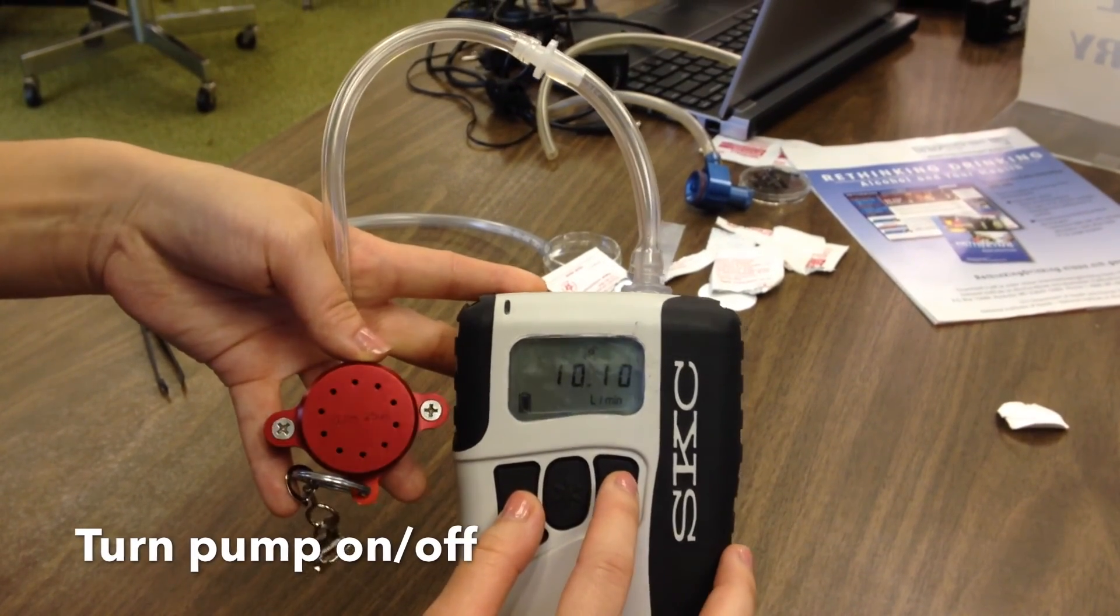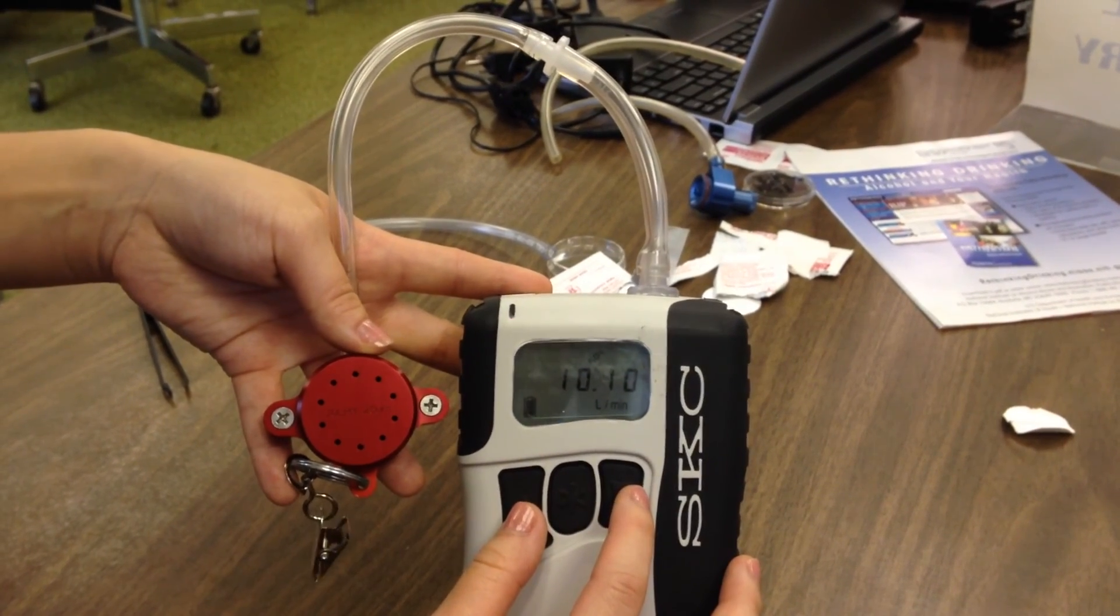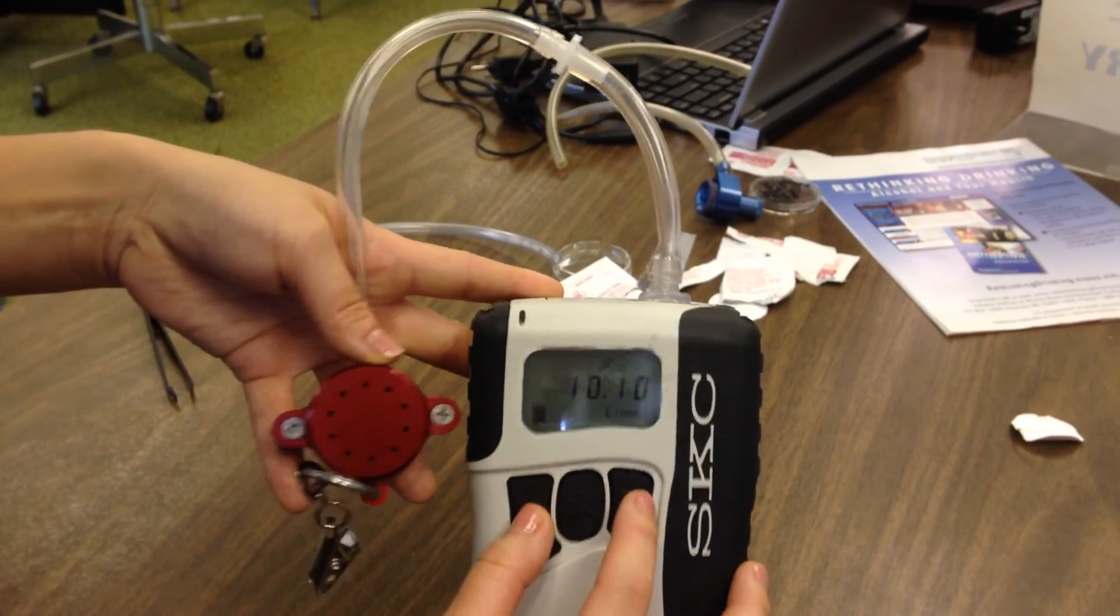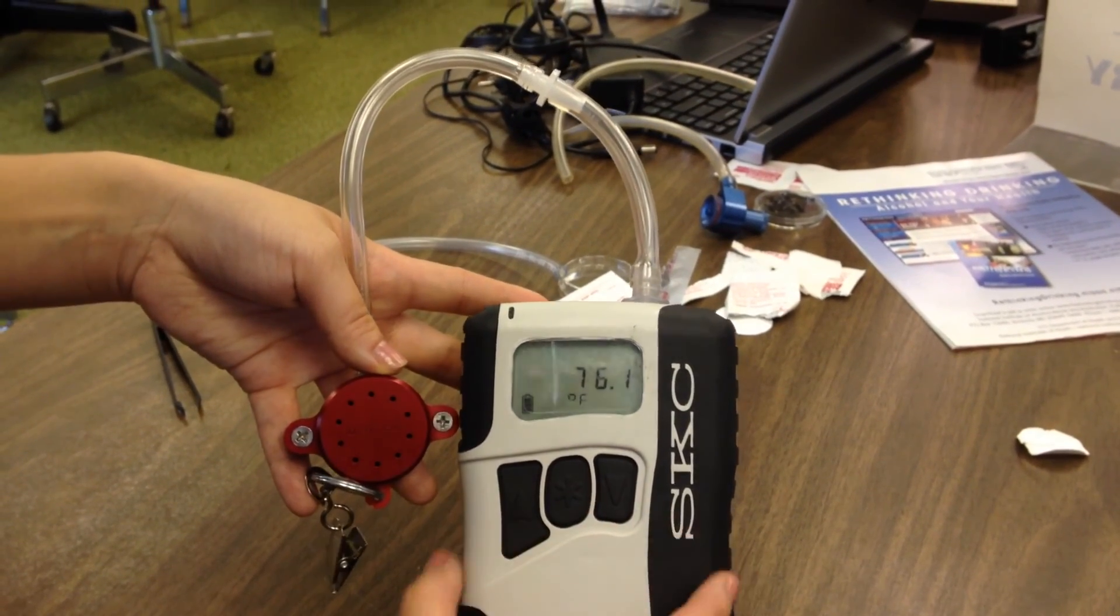Press both up and down arrows simultaneously to turn the pump on and again to place on hold. From hold, press the middle button to turn the pump off.